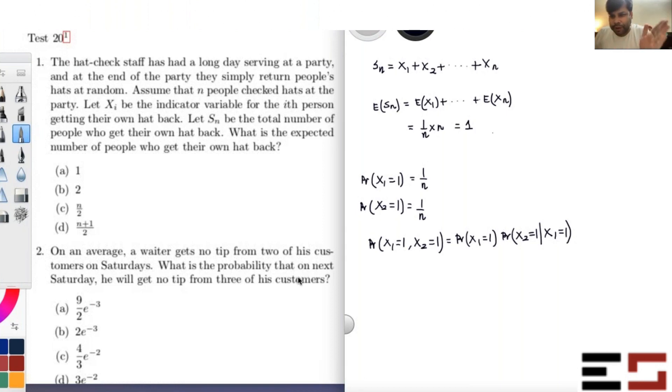Probability of A intersection B is probability of A times probability of B given A, right? Is that okay? Now, what is probability that X1 equals one? Well, that's one by n. Now, given that individual one gets his own hat back, what are the chances that individual two will get his own hat back? One over n minus one. Absolutely. So this is what you have. And you can check that this is not equal to the product of these two, right? Is this fine? So they are not independent.